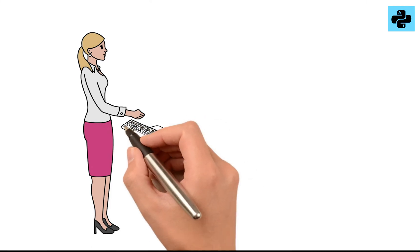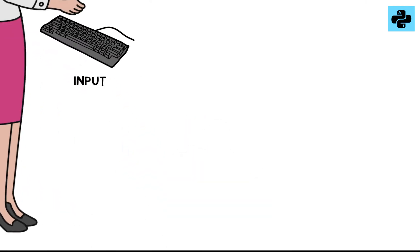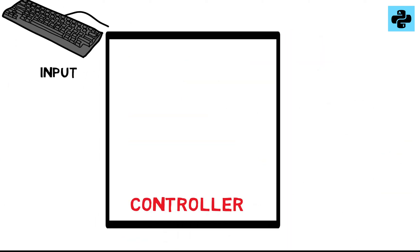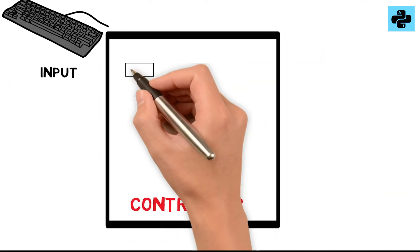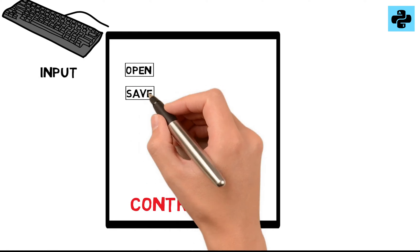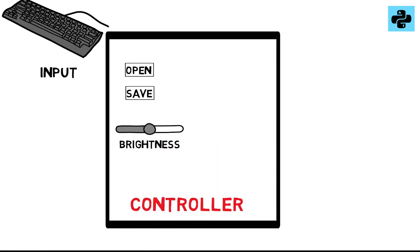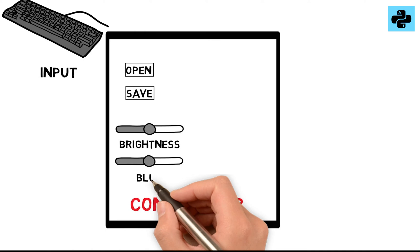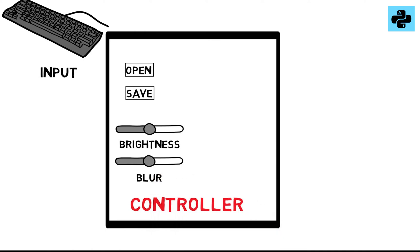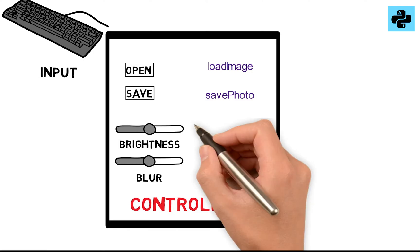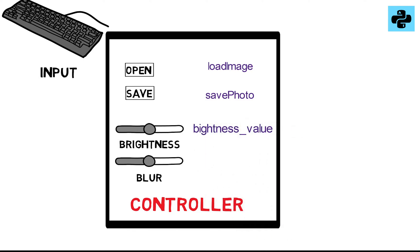From the perspective of MVC, a user will input the data in the form of an image or some values from sliders. The controller can accept user inputs from the buttons or sliders, and then converts them to commands for the model. The functions responsible for the conversions are: load image, save photo, brightness value, and blur value.